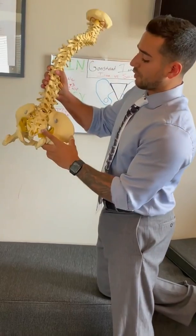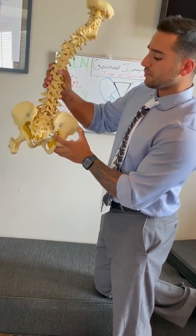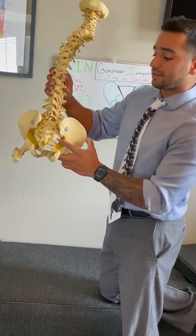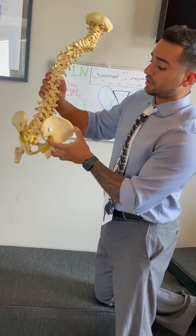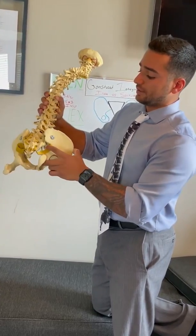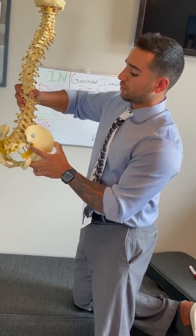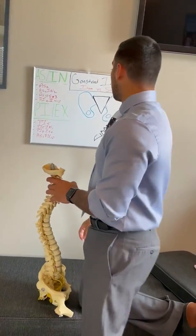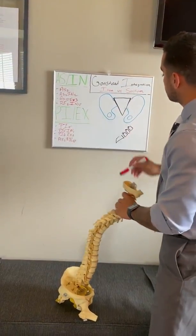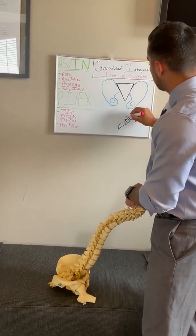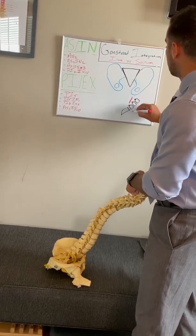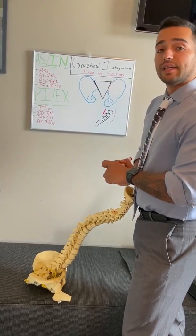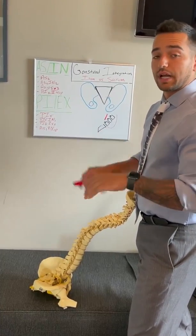As the ilium rocks posterior inferior or external, it will cause the sacrum to go forward. The sacrum and the ilium react counterintuitively to each other — as one goes one way, the other goes the other way. As the ilium rocks posterior, the sacrum rocks anterior, and the lordosis will be very extreme on the X-ray. So we look for the lumbar lordosis: will it be straight, or more extreme than normal? This tells us whether it's a PI or EX, or an AS or IN involved.